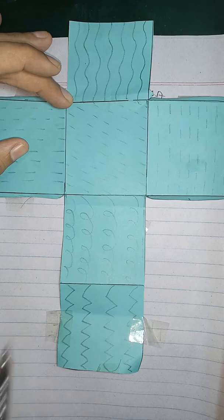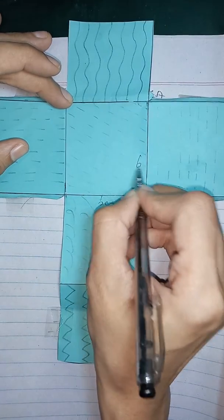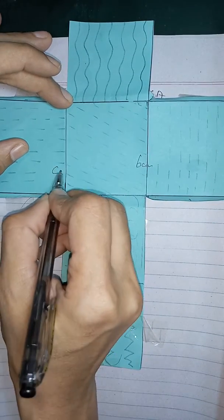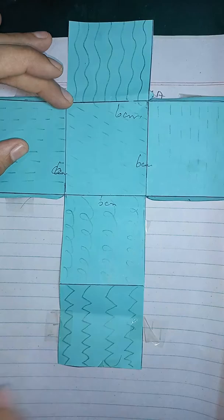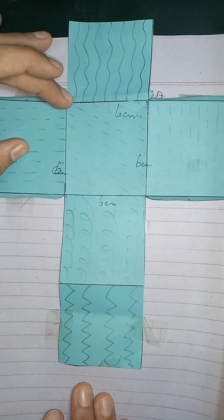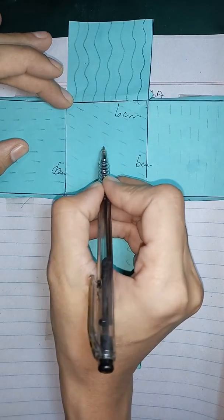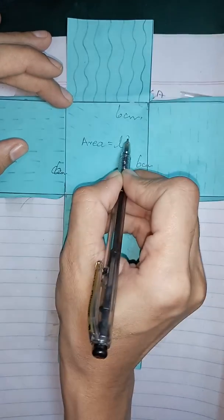And this is a cube of 6 cm each side. It is basically a square and we have already studied the area of a square. What is the area of the square? The area of the square is L square.